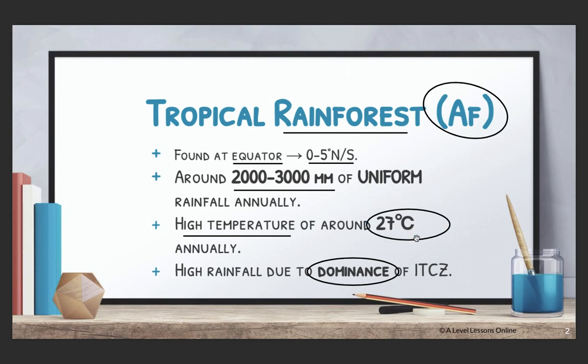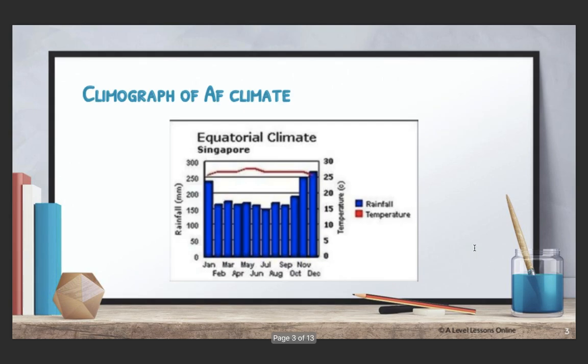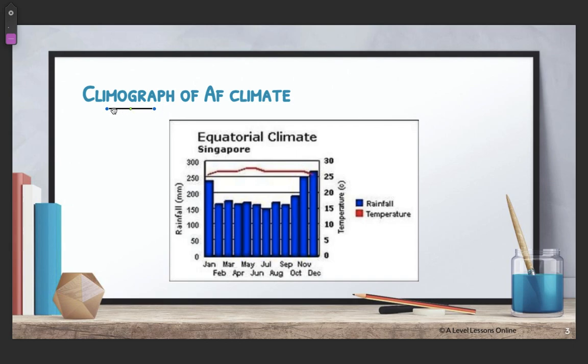A simple example of the tropical rainforest climate is Singapore, which has high rainfall all year round as well as extremely high temperatures — it's usually very hot in Singapore all year round, even when there is high rainfall. Climographs tend to appear in your DRQs, so let's look at the climograph of Singapore.